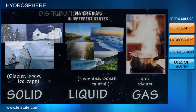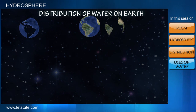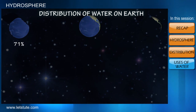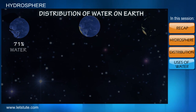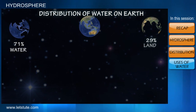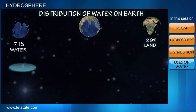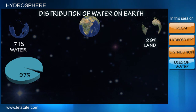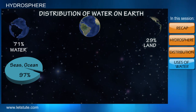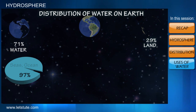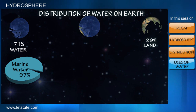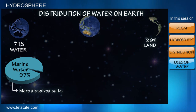If we look at the distribution of water in different forms on our Earth, 71% of our Earth is covered with water and the remaining 29% is land. Around 97% of this water is in seas and oceans, and so we call this water marine water or saline water, as it has a higher amount of dissolved salts.